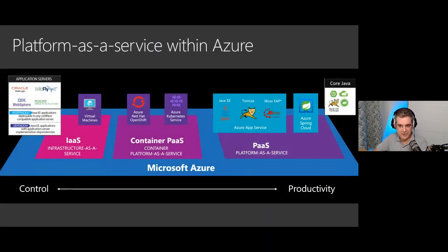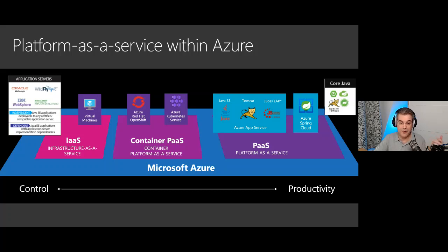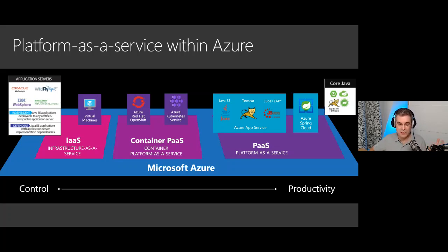Within Azure, Platform as a Service is on the right-hand side of the spectrum. These are the services where we manage most of the underlying systems for you - the OS, the JDK, and sometimes the application server. If you go to the left-hand side, you can run a VM on Azure where you manage everything - you have more control but you have to manage, upgrade, and patch everything. Platform as a Service makes developers more productive because they have less to worry about. As a Java developer, you just write Java code, push it to a PaaS offering, and that service will run your Java code and manage everything for you. That's why most Java people should use Platform as a Service - it's just easier and faster to go to production.